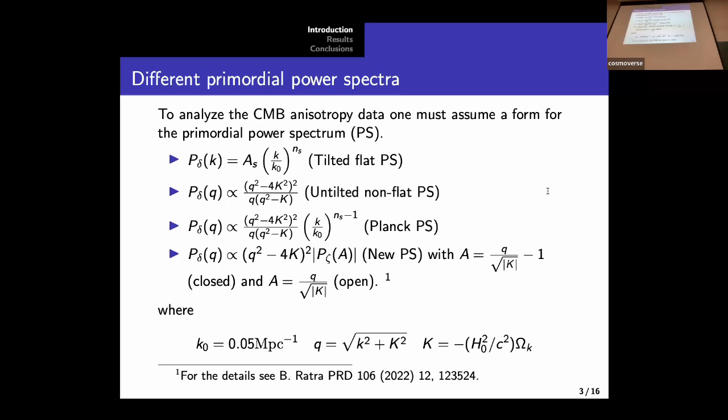So this means that we need the tilt. So if we want to consider both options, curvature and the tilt, we can assume this phenomenological expression for the primordial power spectrum, which recovers the limit of the first power spectrum by setting the curvature parameter equal to zero, and the untilted case by putting ns equal to one. We call this power spectrum the Planck power spectrum, because it is the one that this collaboration uses in their analysis.